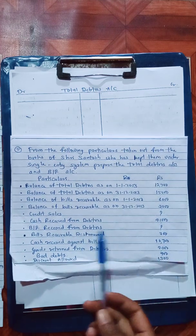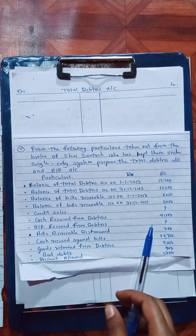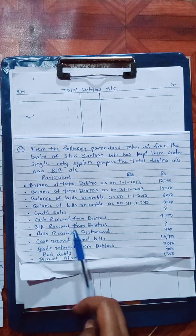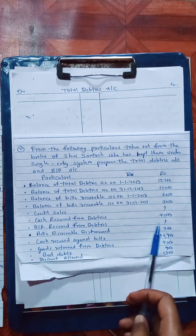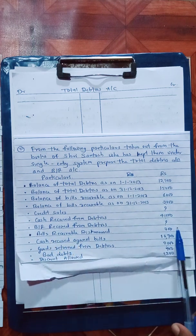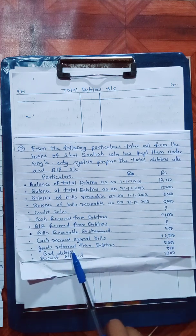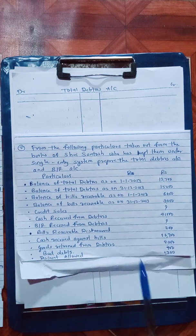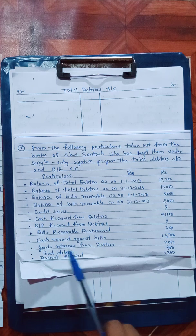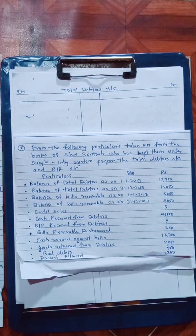Next note: bills receivable received from debtors — that also has a question mark, so bills receivable received from debtors is missing. Then bills receivable dishonored is 300 rupees. Cash received against bills, goods returned from debtors which means sales return, bad debts 700, and discount allowed 1,300.